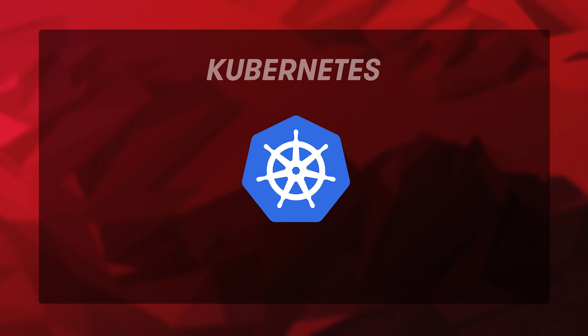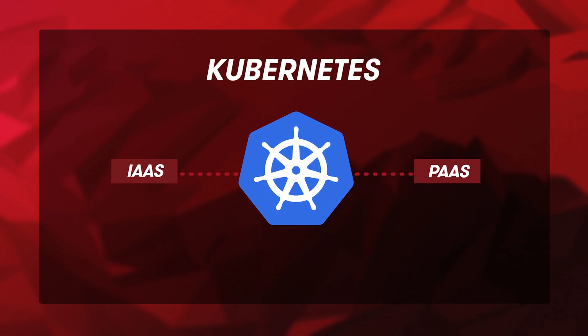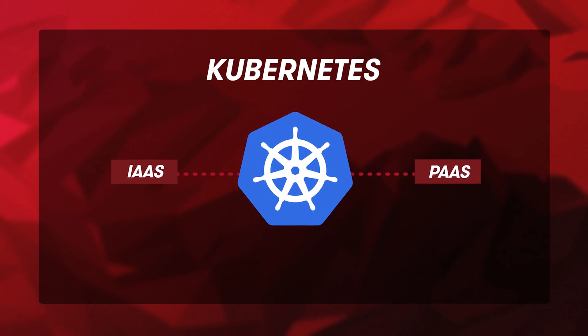Since Kubernetes can be deployed on on-premises data centers as well as on all cloud platforms, it offers a middle ground between IaaS and PaaS options, allowing you to work in a hybrid multi-cloud world, which is increasingly important today.